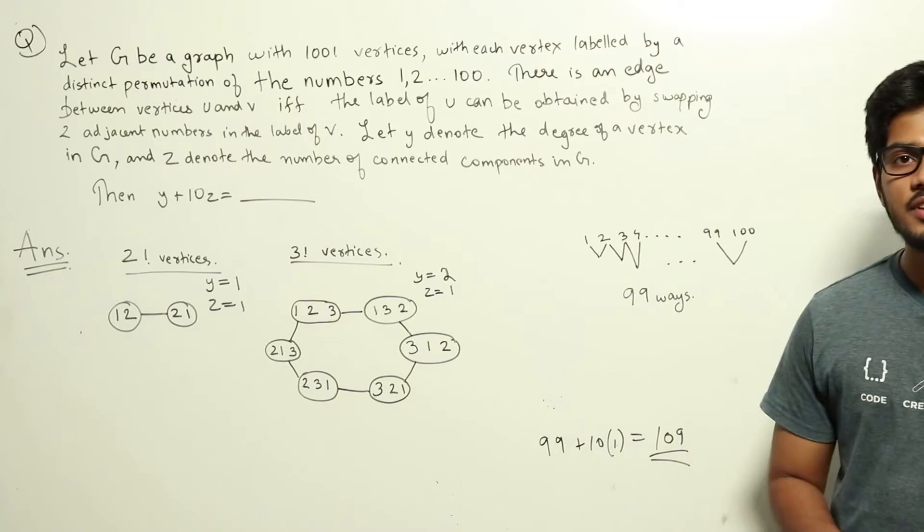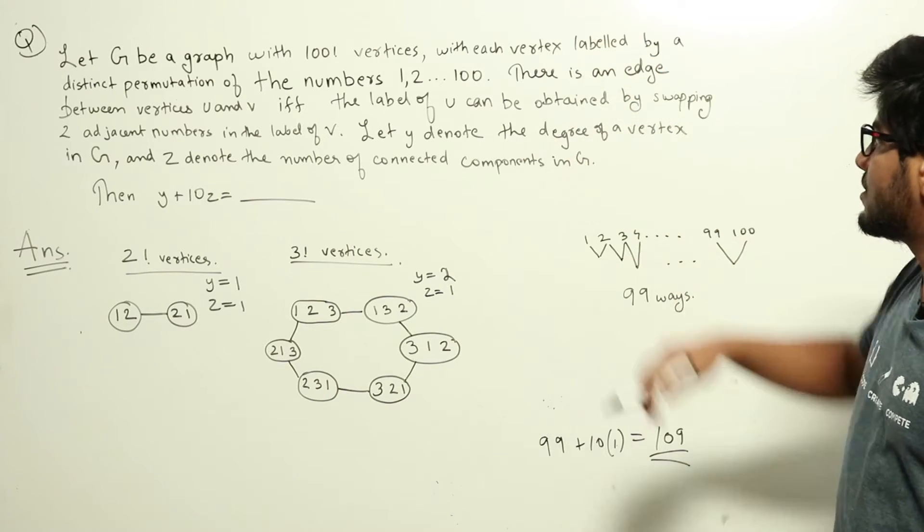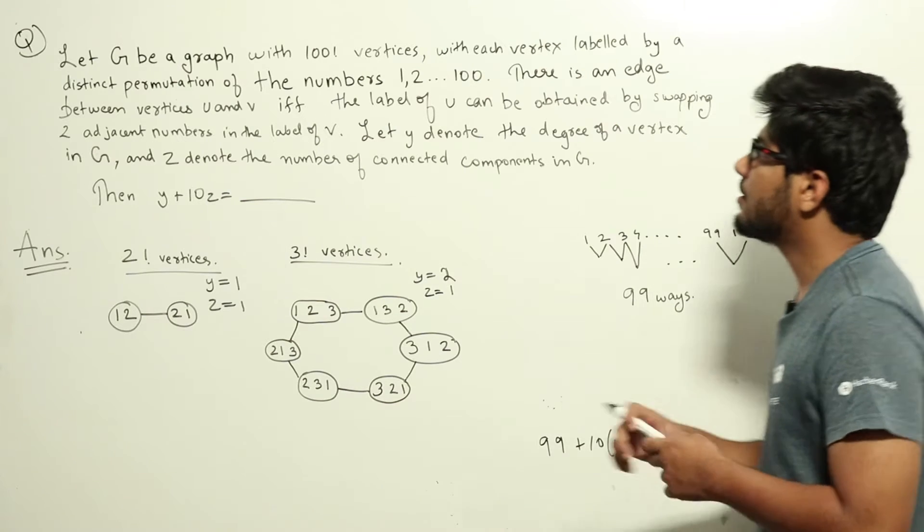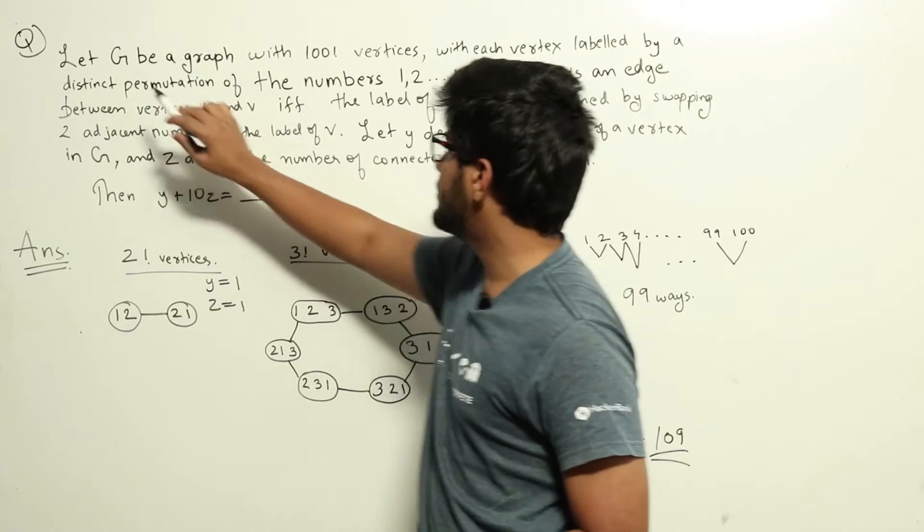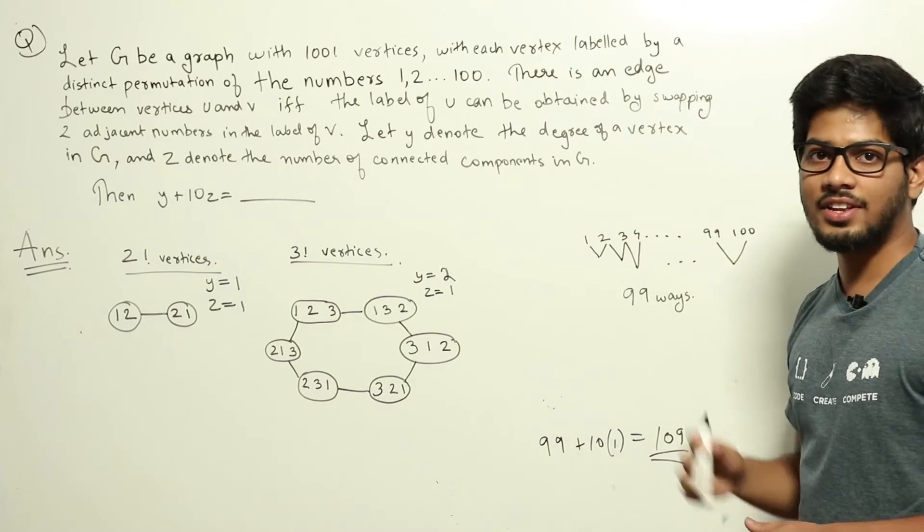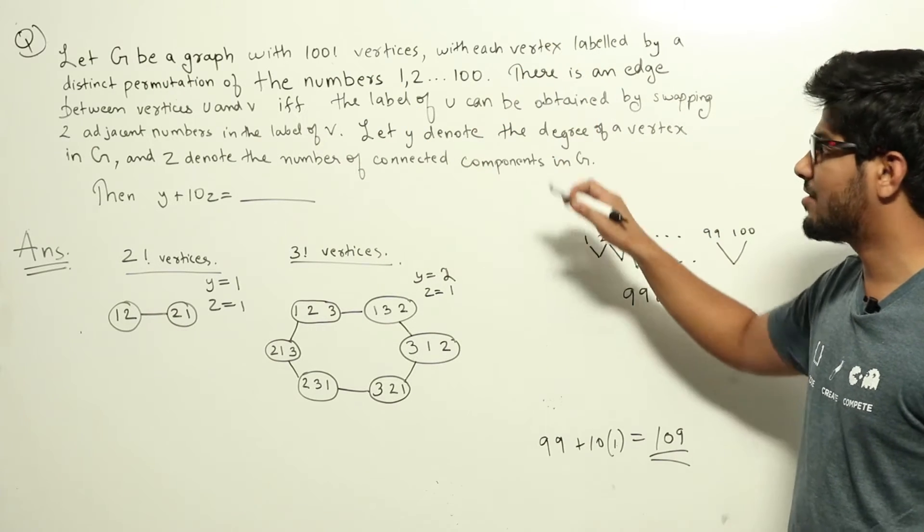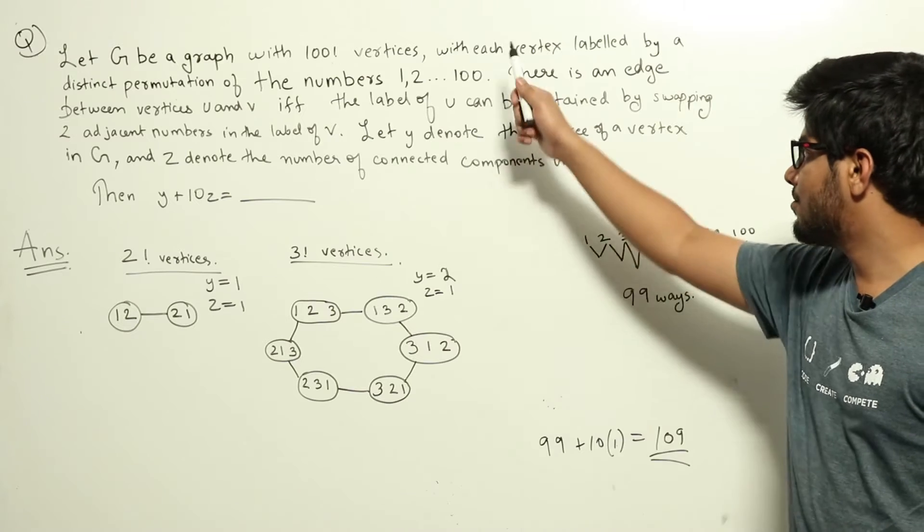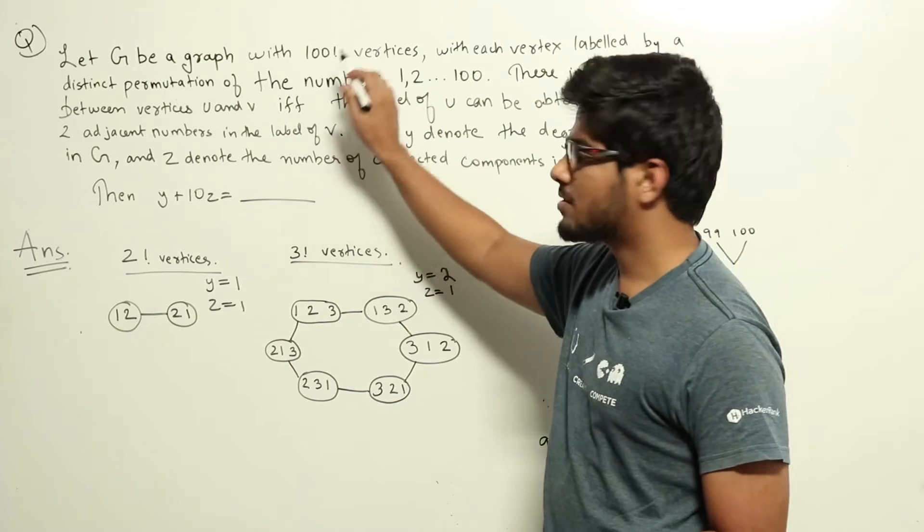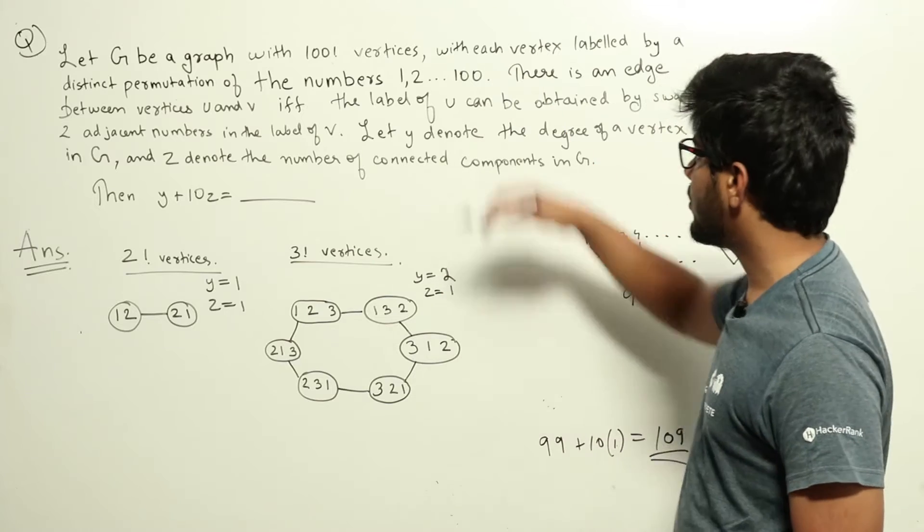This is a question from graph theory. Though the question appears to be complex, it's actually a simple question. I'll show you how to do it here. So here we have been given a graph G having 100 factorial vertices. Obviously 100 factorial is a very large number. We can't draw that graph and try to find the answer to this. But we can draw smaller similar graphs and try to find out patterns from it.